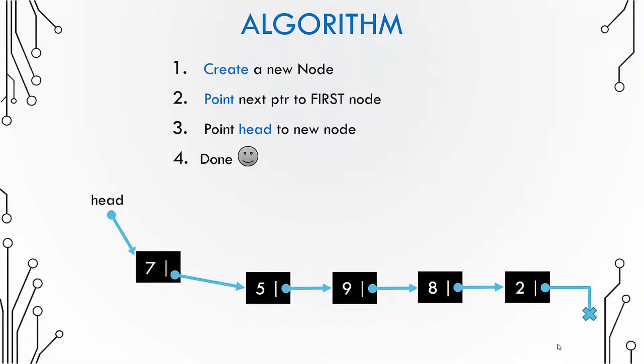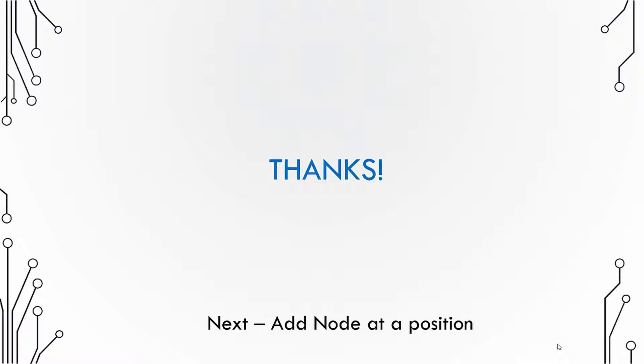Second step is to point that node to the first node of the list so that you linked your newly created node to the linked list. And then since the newly created node is the first node now, you need to move the head pointer to point to the first node. And that is how you prepend a node to a linked list.